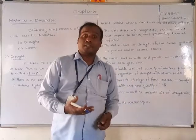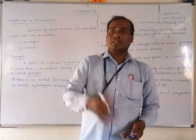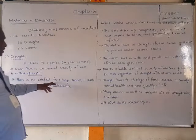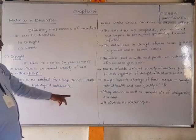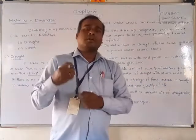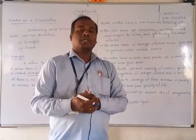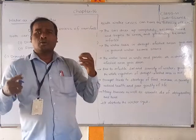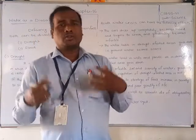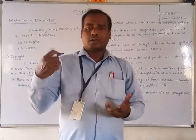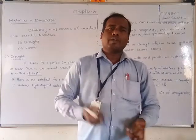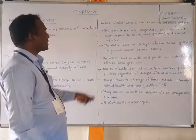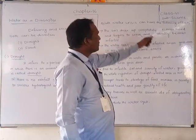Due to drought, we will discuss how human beings, the water cycle, the environment, and ecosystems are affected. If there is no rainfall for a long period, it leads to serious hydrological imbalance — meaning total water problems will occur. So many people will die due to thirst or dehydration, agriculture cannot be done, and we won't get water for drinking or bathing.